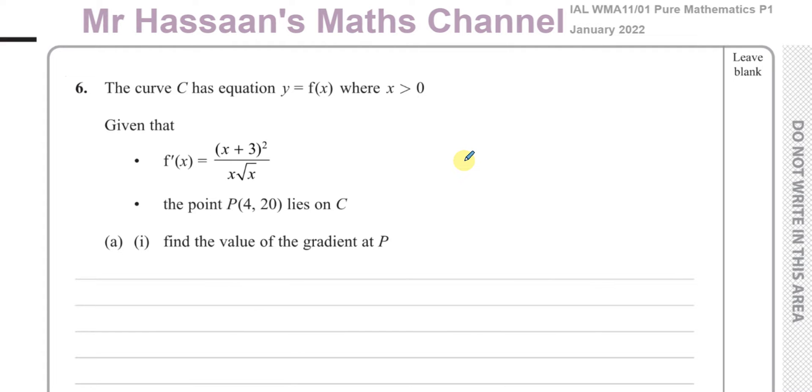This question is about a curve labeled C, which has an equation y equals f of x, where x is greater than 0. We're given that f'(x) equals (x + 3)² over x times root x, and we're also told that the point P(4, 20) lies on C.